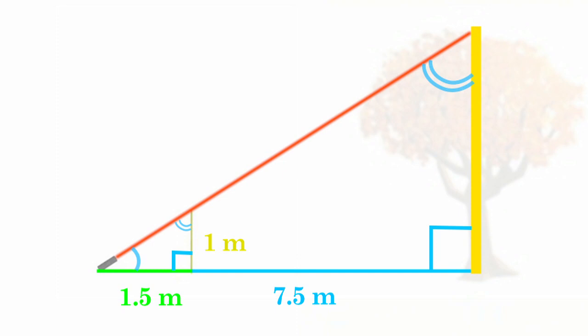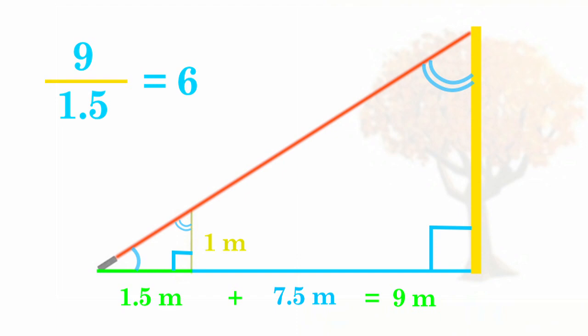The base of the smaller triangle is 1.5 meters, and the base of the bigger triangle is 1.5 plus 7.5 meters, or 9 meters. That means the difference in scale of these triangles is 9 divided by 1.5, or 6. The bigger triangle is 6 times bigger than the smaller triangle, so the height of the bigger triangle is 6 times the height of the smaller triangle, which is 1 meter.